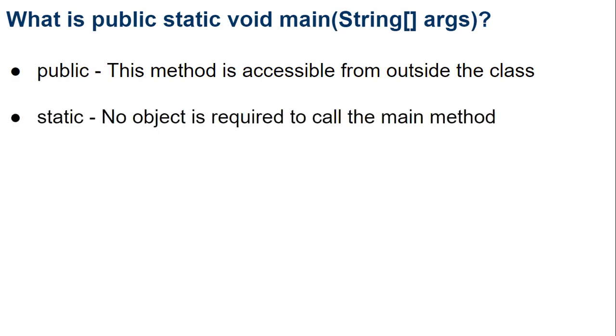When JVM calls your main method at that stage, it does not create any object of the class. That means the methods that are marked as static can be called without creating any object of that class.